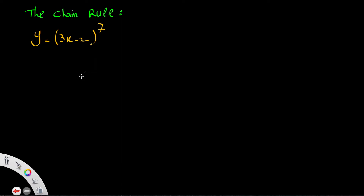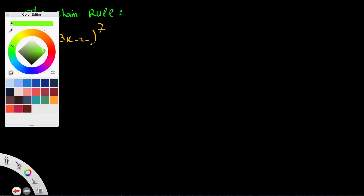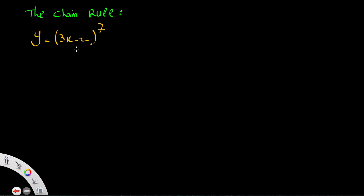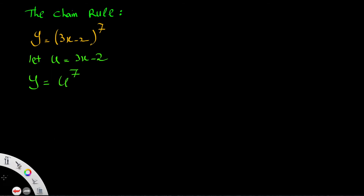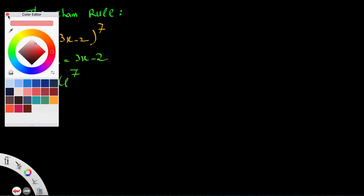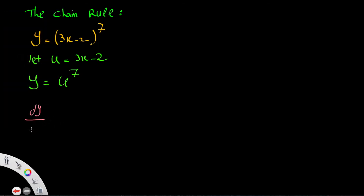This efficient method is called the chain rule. In the chain rule, instead of treating y as a function in terms of x, we consider y as a function in terms of u. Let u be 3x minus 2, then y will be u to the power of 7. So y has changed from a function in x to a function in terms of u.